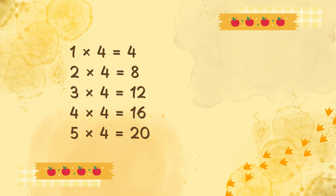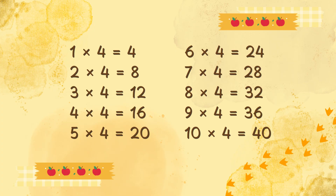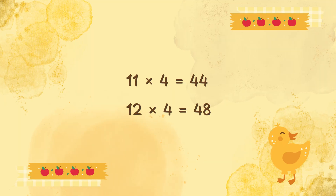1 times 4 is 4, 2 times 4 is 8, 3 times 4 is 12, 4 times 4 is 16, 5 times 4 is 20, 6 times 4 is 24, 7 times 4 is 28, 8 times 4 is 32, 9 times 4 is 36, 10 times 4 is 40, 11 times 4 is 44, 12 times 4 is 48.